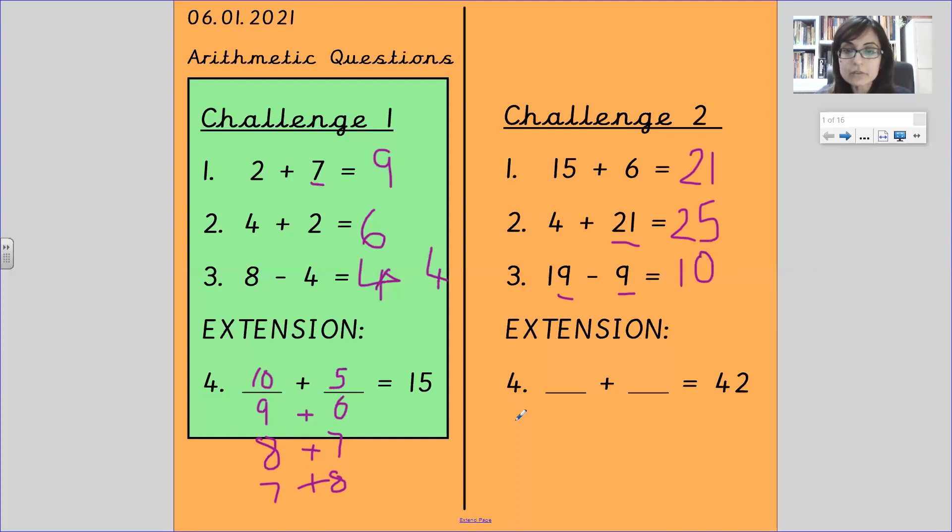Here's our extension for number 4. Two numbers that make 42. One way to start off with is by looking at the tens. You'd have 4 tens, 40, add 2. You could then take a 10 away from 40, which leaves you with 30. Add the 10 onto the other side, which gives you 12. And if you carried this pattern on, what do you think you might get next?